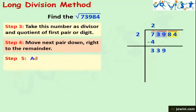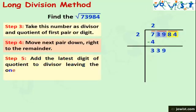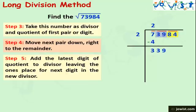Step 5 is to find a new divisor. We add the latest digit in the quotient to the previous divisor. The quotient digit is 2, so adding 2 to the previous divisor 2 gives us 4. We write 4 and leave the ones place vacant.